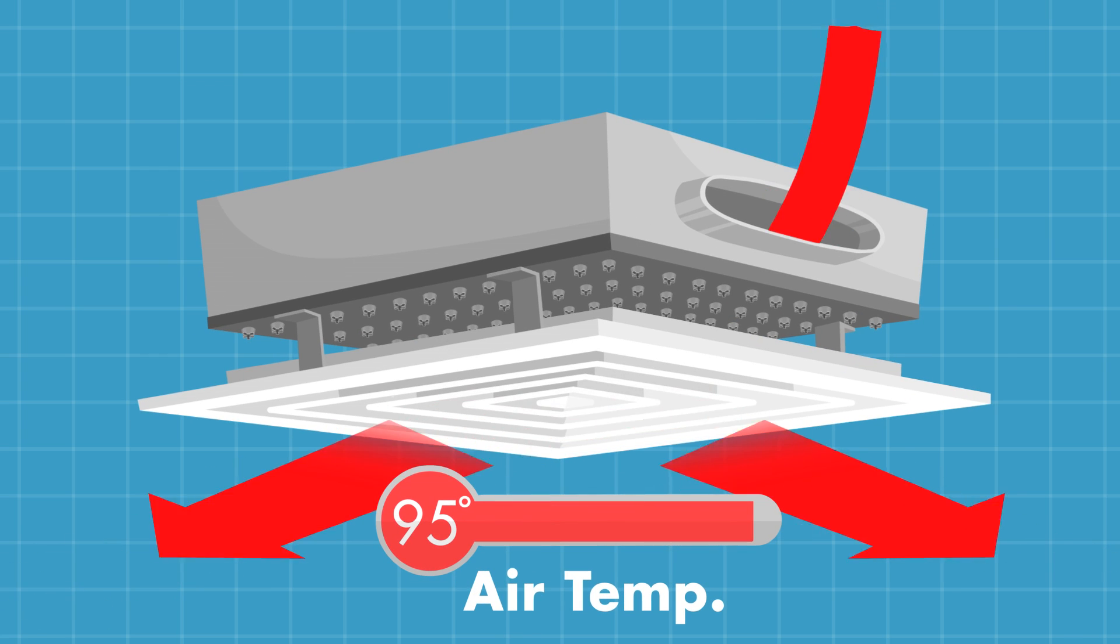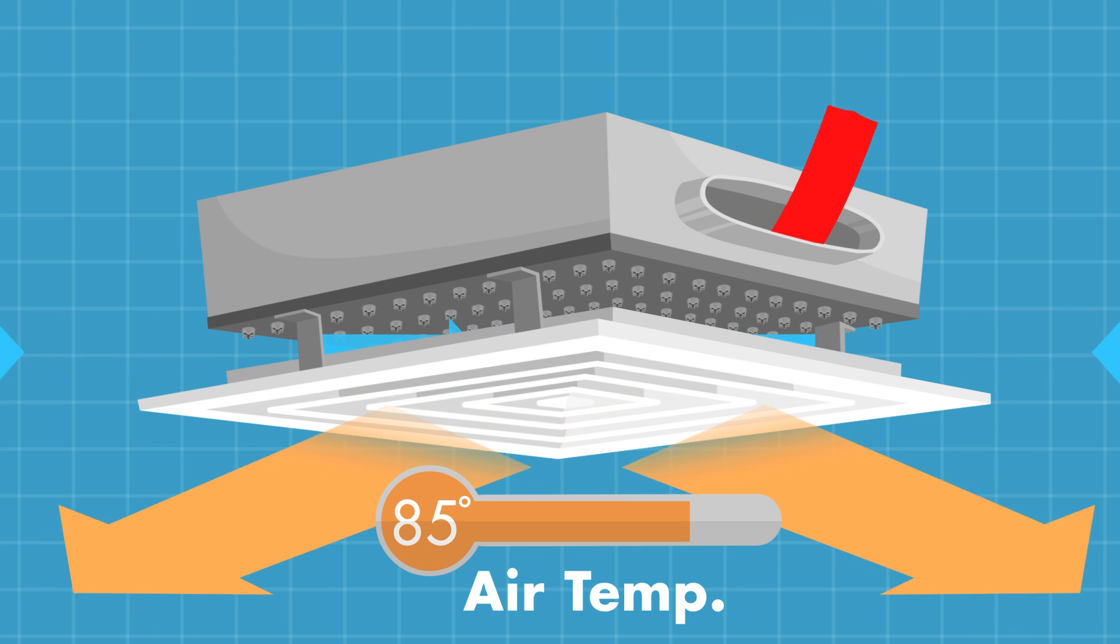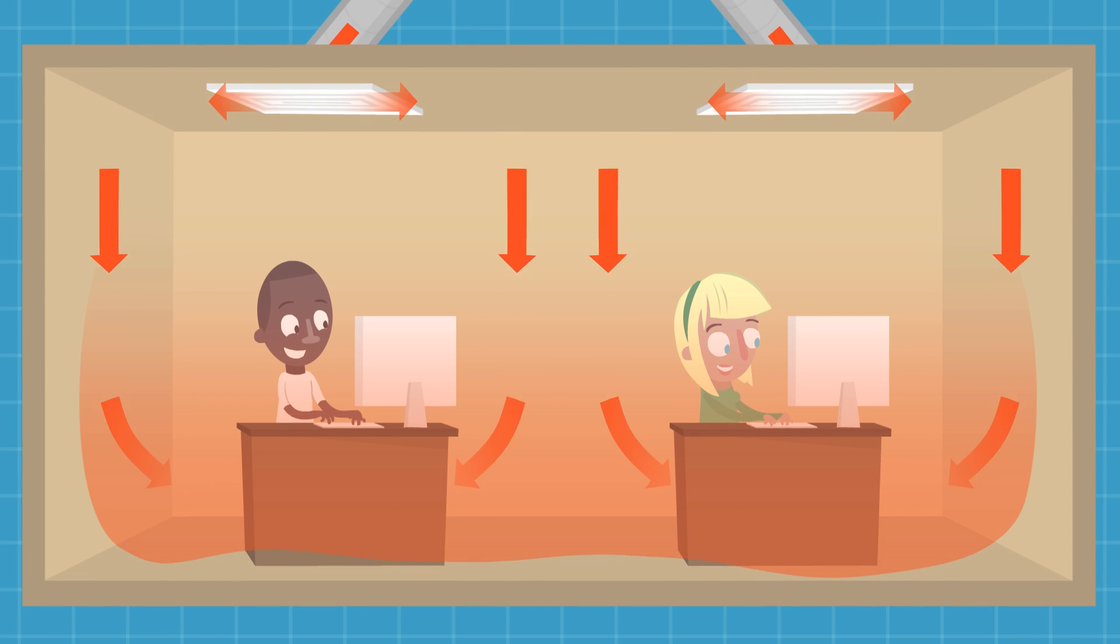When heating, infusers overcome age-old VAV problems and improve comfort by discharging air at a higher total volume and lower temperature. This keeps tenants toasty where it matters, rather than leaving all the warmer air at the ceiling.